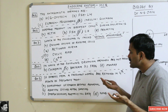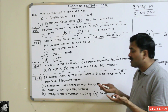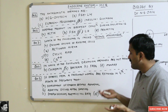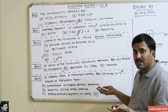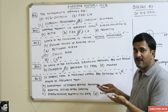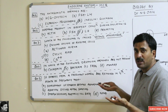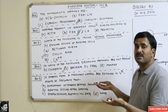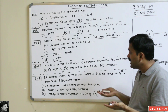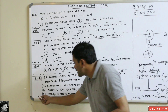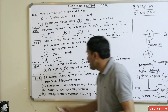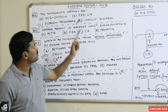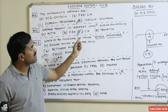If the ovary is removed in the fourth month, there will be no major effect on embryo development because by that stage the embryo is already developing in the uterus. Removing the ovary at this point will not affect it, so the answer is option C — the embryo develops normally till birth.